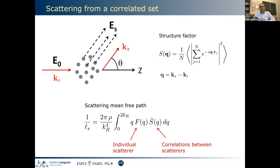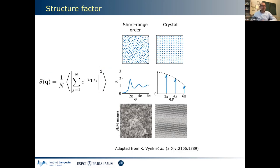You can show theoretically that given S(q) different from one, you change the value of the scattering mean free path by a formula involving k_r (the wave vector in the background medium, 2π/λ), the density ρ, and f(q) describing the scattering property of an individual scatterer. The integral of f(q) gives the scattering cross section of an individual scatterer, and this accounts for all collective interactions — the change of mean free path due to statistical correlations between scatterers.